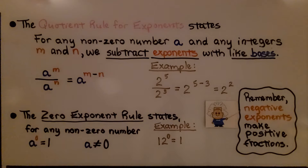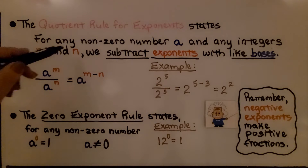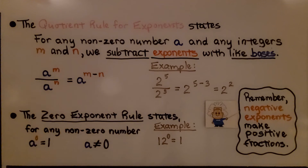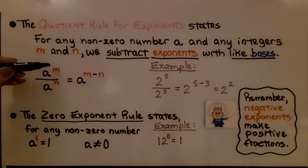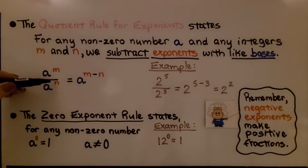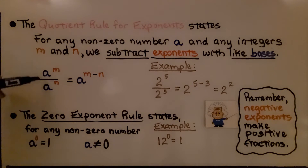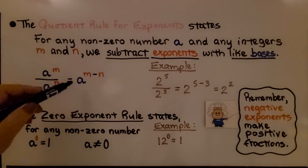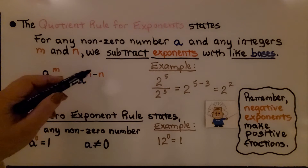The quotient rule for exponents states: for any non-zero number a and any integers m and n — those would be the exponents — we subtract exponents with like bases. So if we have a to the m over a to the n, we have a like base here, both a, and we would have a to the m minus n.